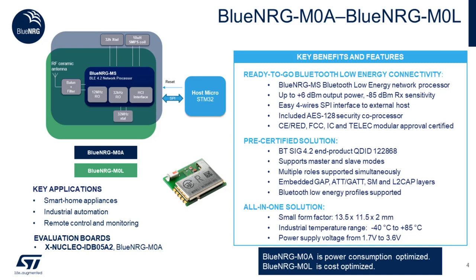They come in a small form factor, which makes them ideal for IoT applications, and support the industrial temperature range from minus 40 to 85 degrees. Their supply voltage goes from 1.7 to 3.6V, which along with their ultra-low power consumption makes them ideal for battery-powered applications. Some of the key applications are smart home and industrial automation, remote control, and monitoring devices.